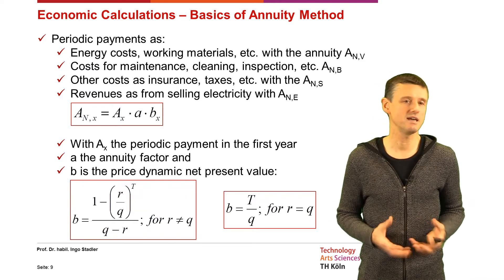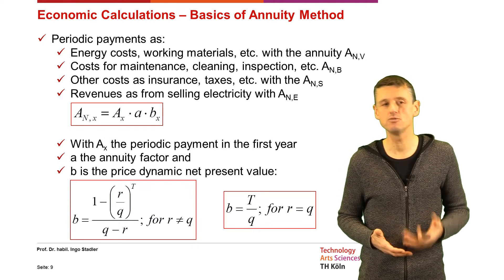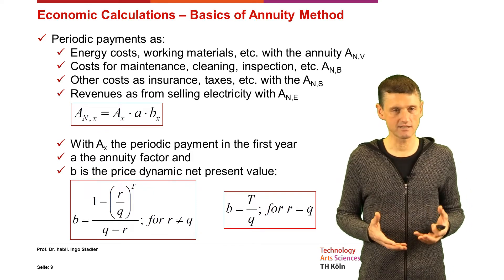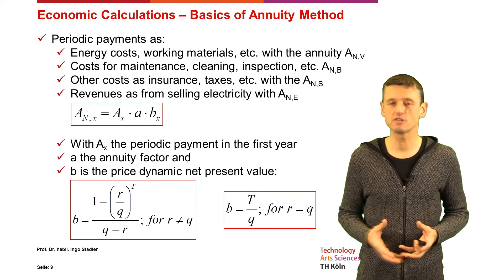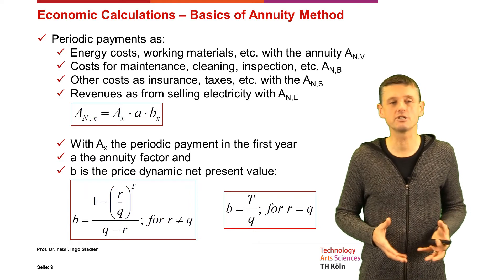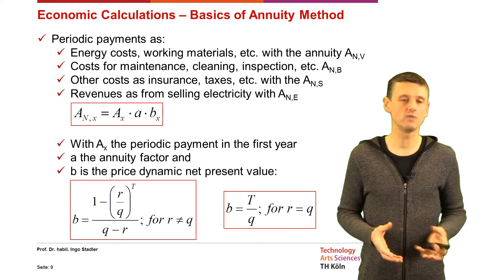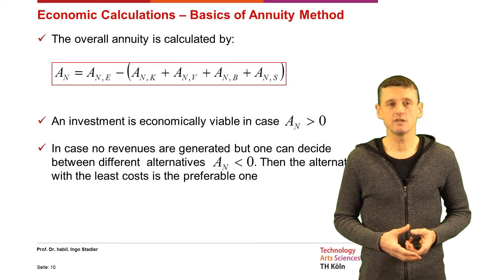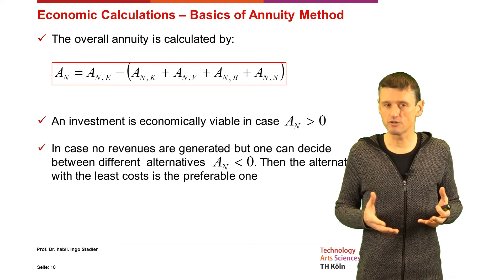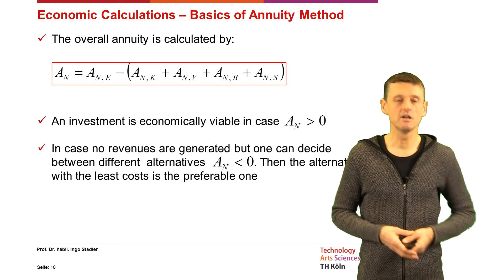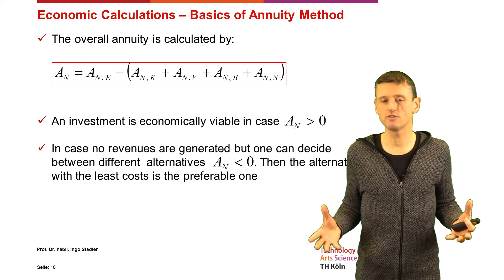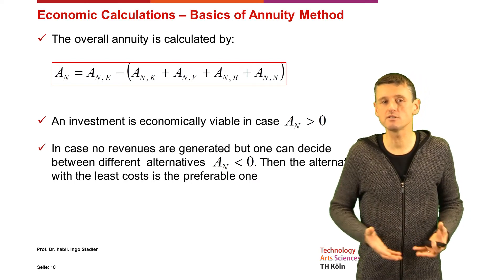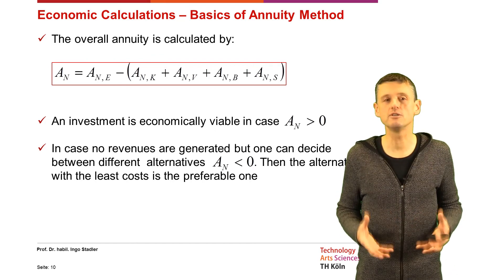All those annuities ANX are calculated as AX times the annuity factor times the price dynamic net present value b. Two equations are given for b: one when r is not equal to q, and one when r equals q. The overall annuity is then revenues from selling electricity minus all cost annuities — investment annuities and periodic costs. An investment is economically viable when the overall annuity is greater than zero.